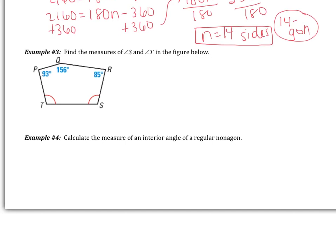Example 3: find the measures of angles S and T in the figure. We have a pentagon — a five-sided figure — so the interior angles sum to 180 multiplied by 5 minus 2, which is 540. The two arcs shown in the figure mean that angles S and T are congruent.